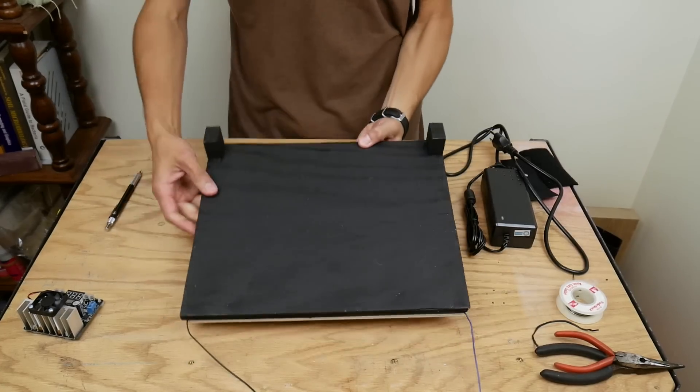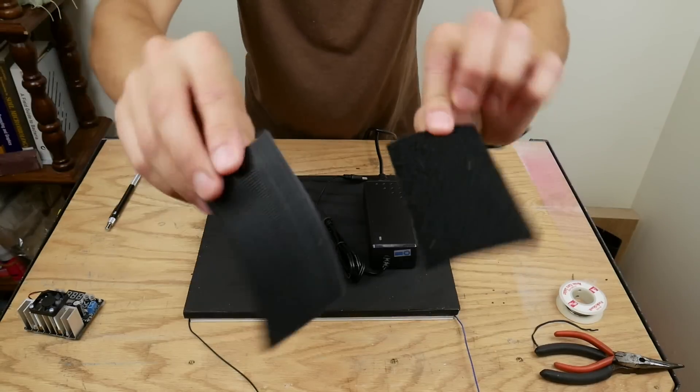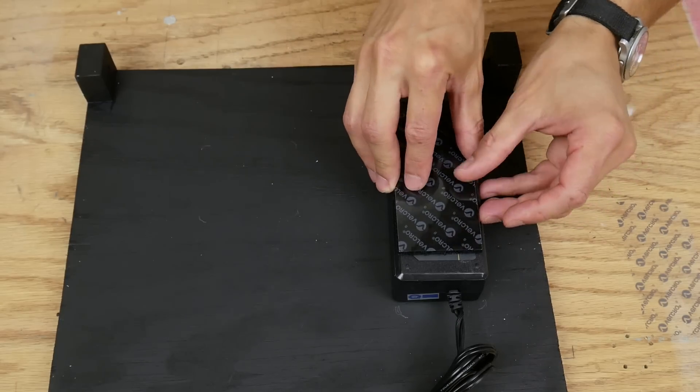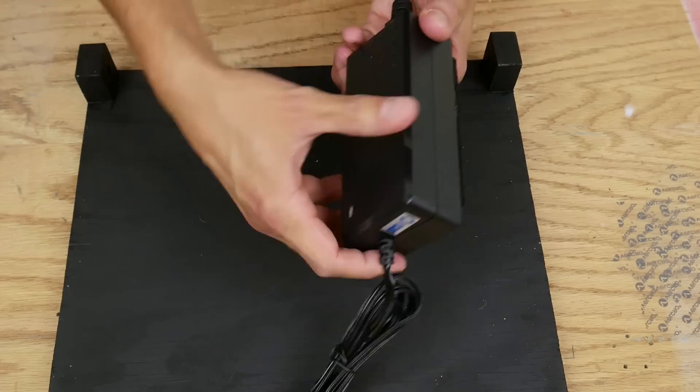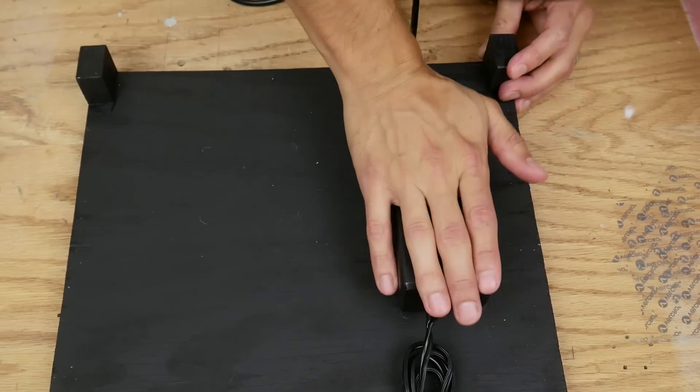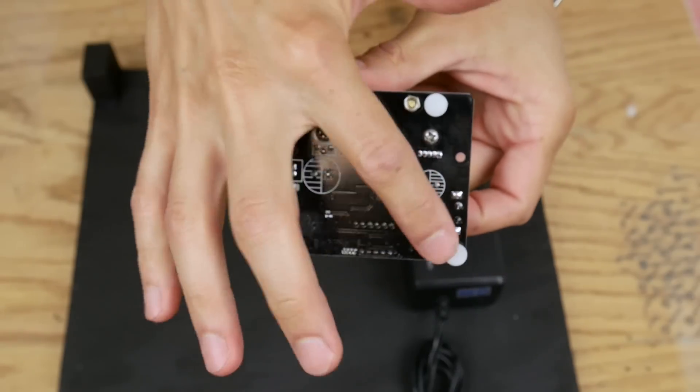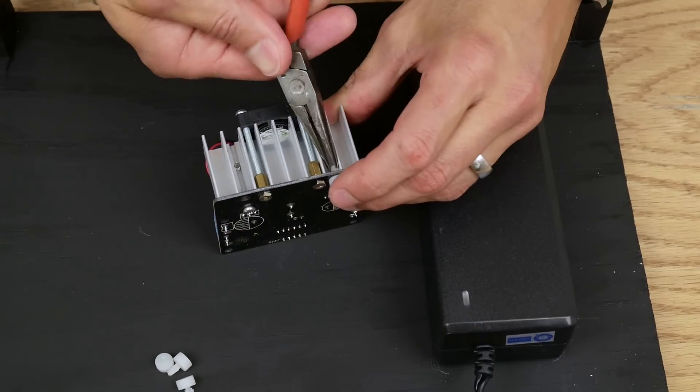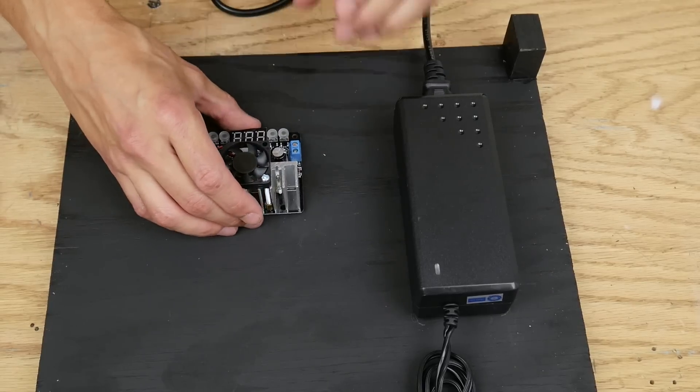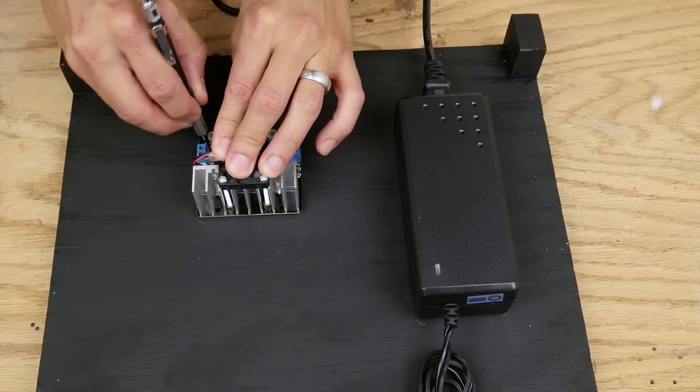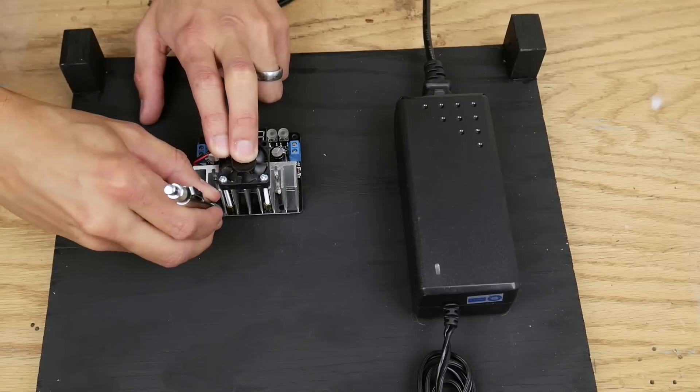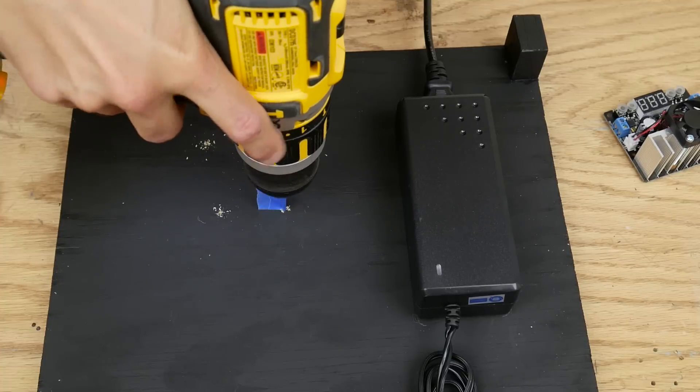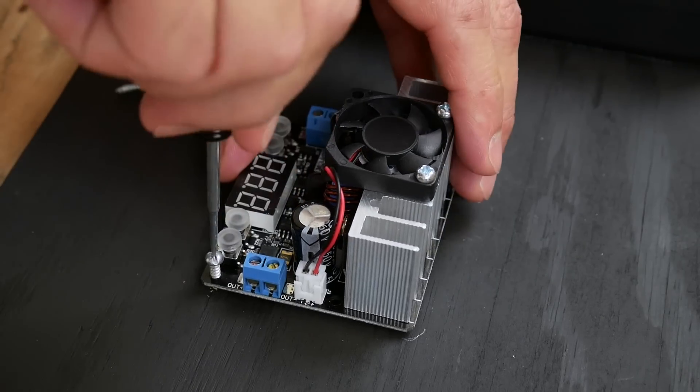I positioned the power supply on the back of the panel and attached it with a velcro pad. The converter came with little plastic feet that I removed. I positioned it and marked the holes where the feet once were. I drilled pilot holes at these spots and used little wood screws to attach the converter to the panel.